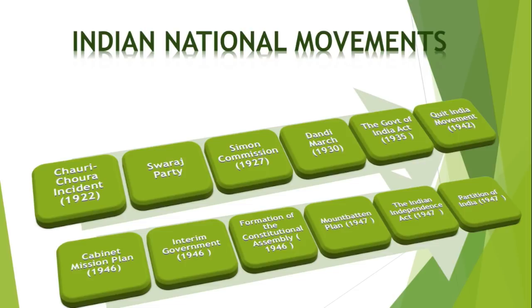Mountbatten was appointed as the Governor General of Free India and M.A. Jinnah was the first Governor General of Pakistan. This was all about Indian national movements that happened between 1857 and 1947. In my next videos, I will go into detail on each of the topics. Thank you for watching.